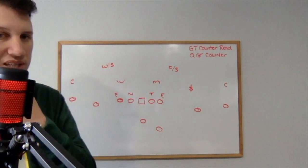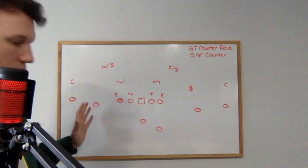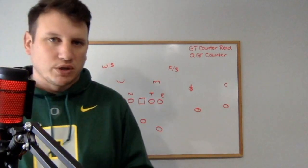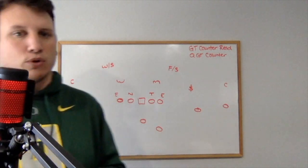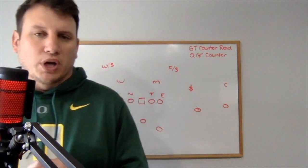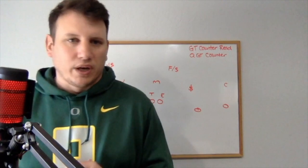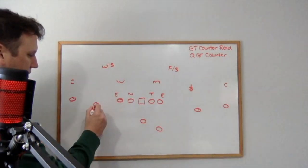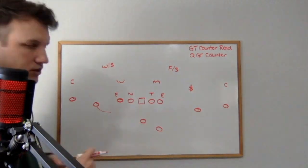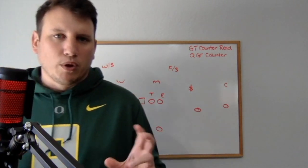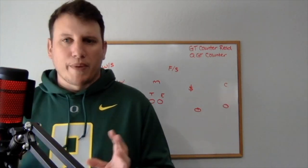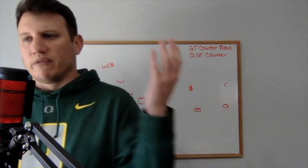The first way I like to run counter tray with jet motion starts in a two-by-two look. We're going to use our slot on the left, sending him in jet motion across the field to the right. You can obviously do this in either direction. When the quarterback wants to bring a guy in motion from shotgun, we just wave him in — that tells the receiver he's coming in motion. The timing is all on the quarterback.